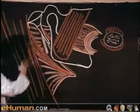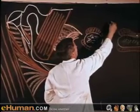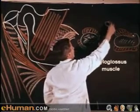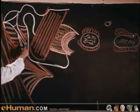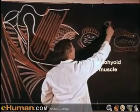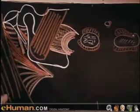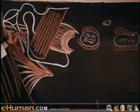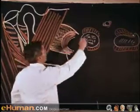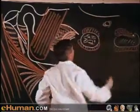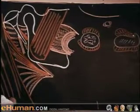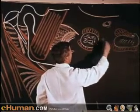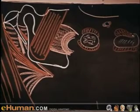Now we put in the styloid process, and indicate the muscles attached to it: the styloglossus passing forward, the stylohyoid muscle passing from near the tip, and the stylopharyngeus muscle. Medial to the styloid process and its muscles is clearly the superior constrictor. We now have a triangular area in which the parotid gland will lie, bounded in front by the mandible and behind by the mastoid process and its associated muscles.